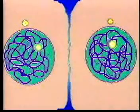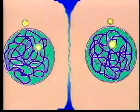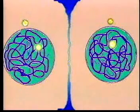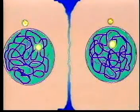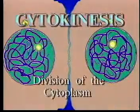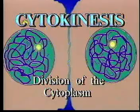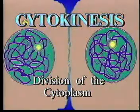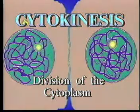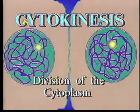As the final stage of mitosis concludes, the cytoplasm divides in half as cell membranes close up around the two new daughter cells. This final process of cell reproduction is called cytokinesis. Cytokinesis is defined simply as the division of the cytoplasm during mitosis.